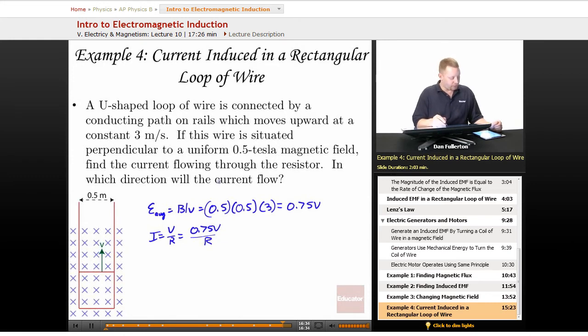And in which direction will the current flow? Well, to do that we're going to do Lenz's Law again. As V is moving up this way, we're getting more flux down through that area. It's getting bigger, we're getting a bigger flux.